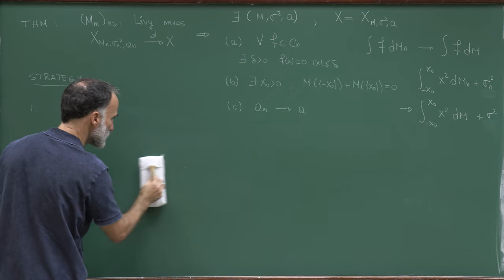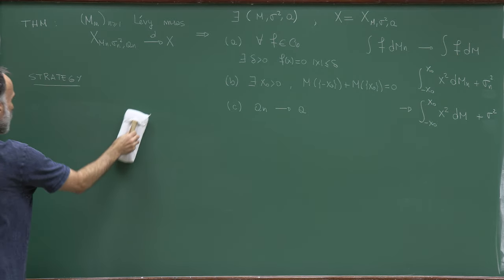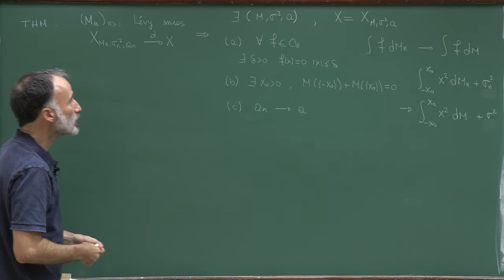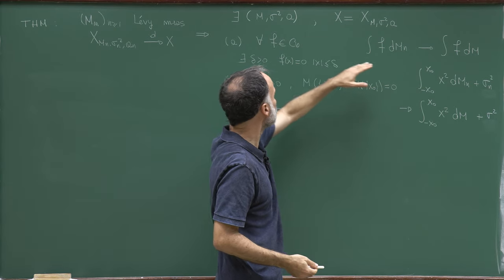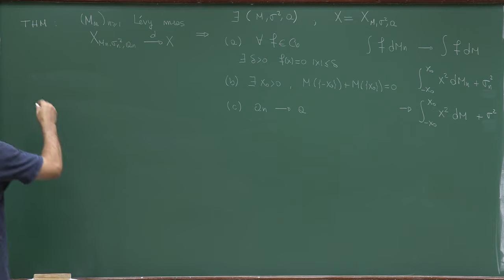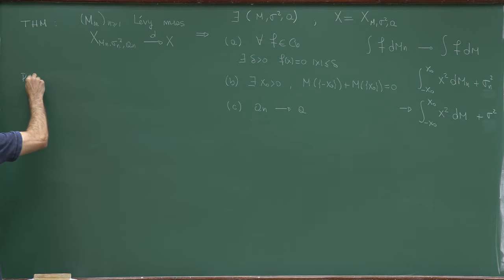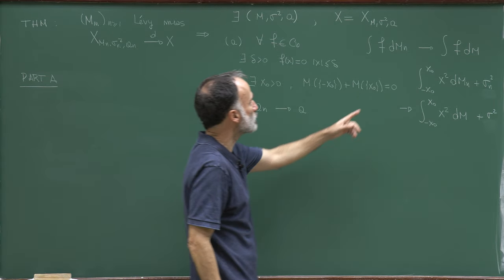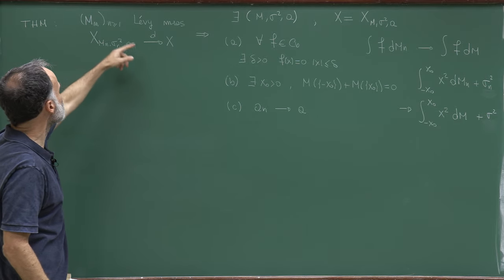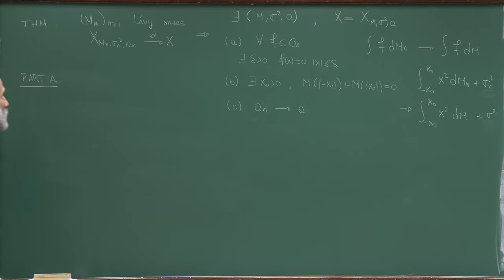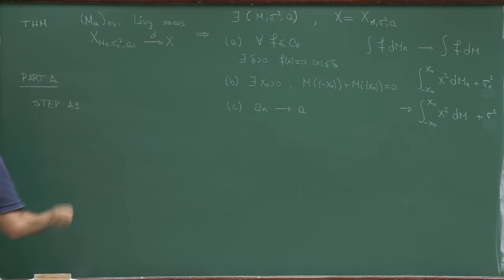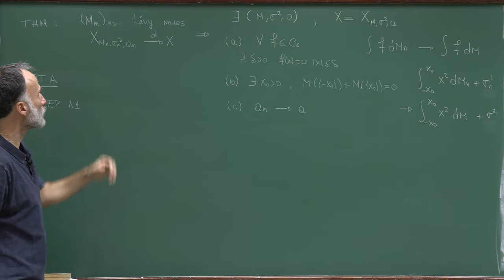So the strategy for this sequence is: we will first consider a subsequence, extract from it a sub-subsequence satisfying all three properties, and then prove uniqueness of the limit point. This proof will be divided into several parts — I think five parts. The first part consists in obtaining properties of the sequence Mn. Part A will be to obtain properties of the sequence Mn by knowing that this sequence converges in distribution. Let's start with step A1. I know that this sequence converges to x.